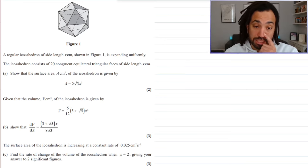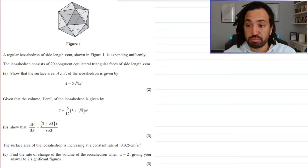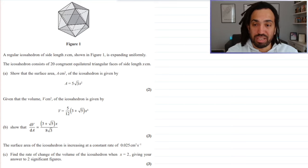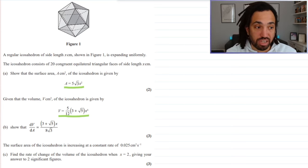Okay, part B says we have the volume here and it says that show that dV by dA is equal to this. Okay, so the kind of trick to these questions, like in simplistic forms, is just differentiate each equation that you have and then try and make it work. So, in this instance, we know this equation and we know this equation. Both of them are equations in terms of x, so we're going to differentiate each of them in terms of x.